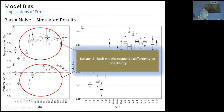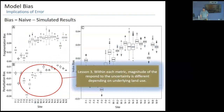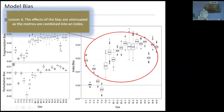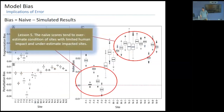The stars are the naive scores and the box-and-whiskers show the error pushed through the simulation. Up in the less impacted areas, the naive scores scored better than the error-adjusted scores. Down in the more urban areas they scored about the same, or sometimes the error-adjusted scored slightly better. Checking for bias — naive minus simulated scores — produced some lessons: each metric responds differently to uncertainty, each metric responds differently to the underlying land cover, the effects of bias are attenuated when you add all the metrics together into an index, and naive scores tend to overestimate ecological condition in the least impacted sites and underestimate it in the more impacted sites.